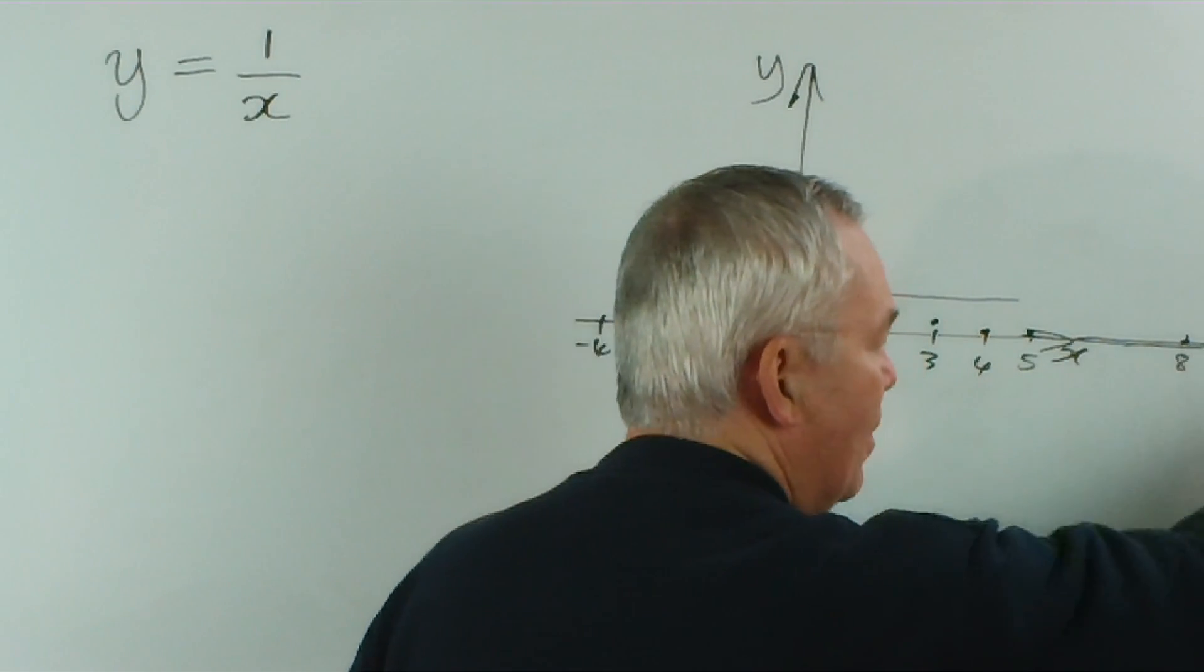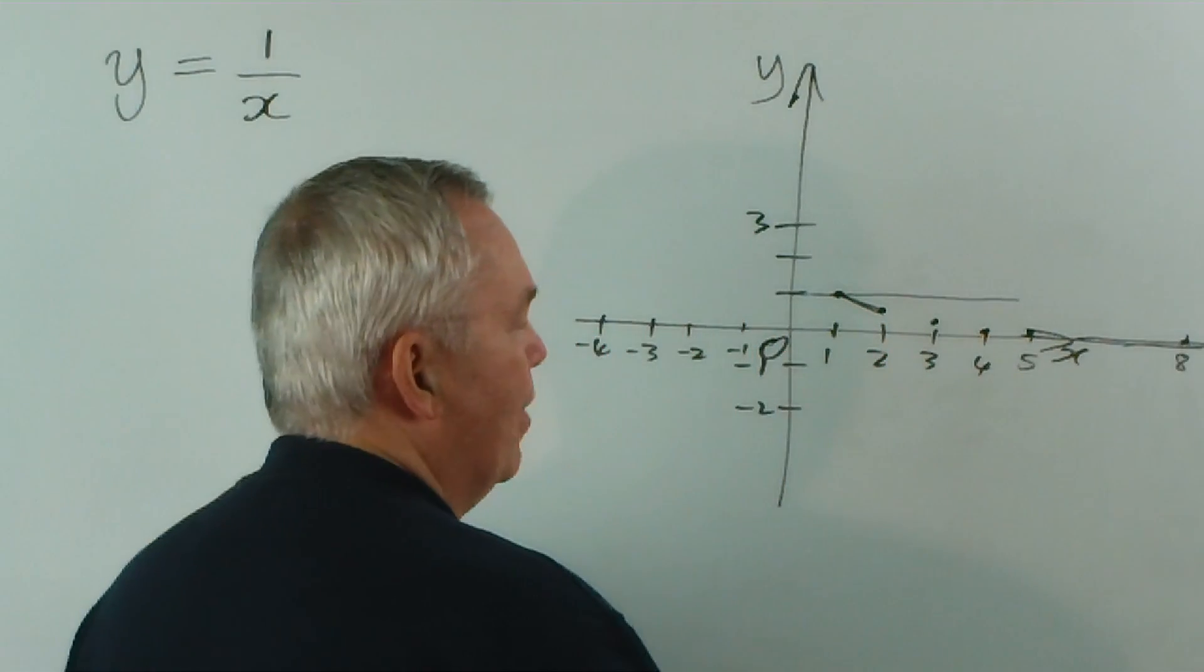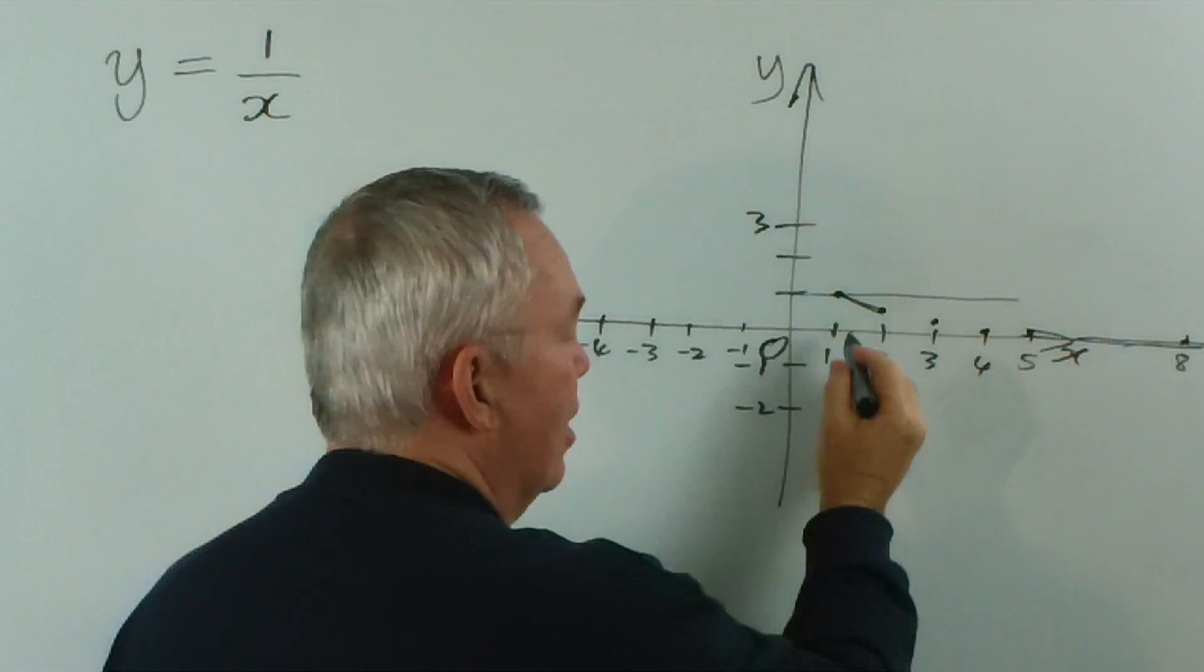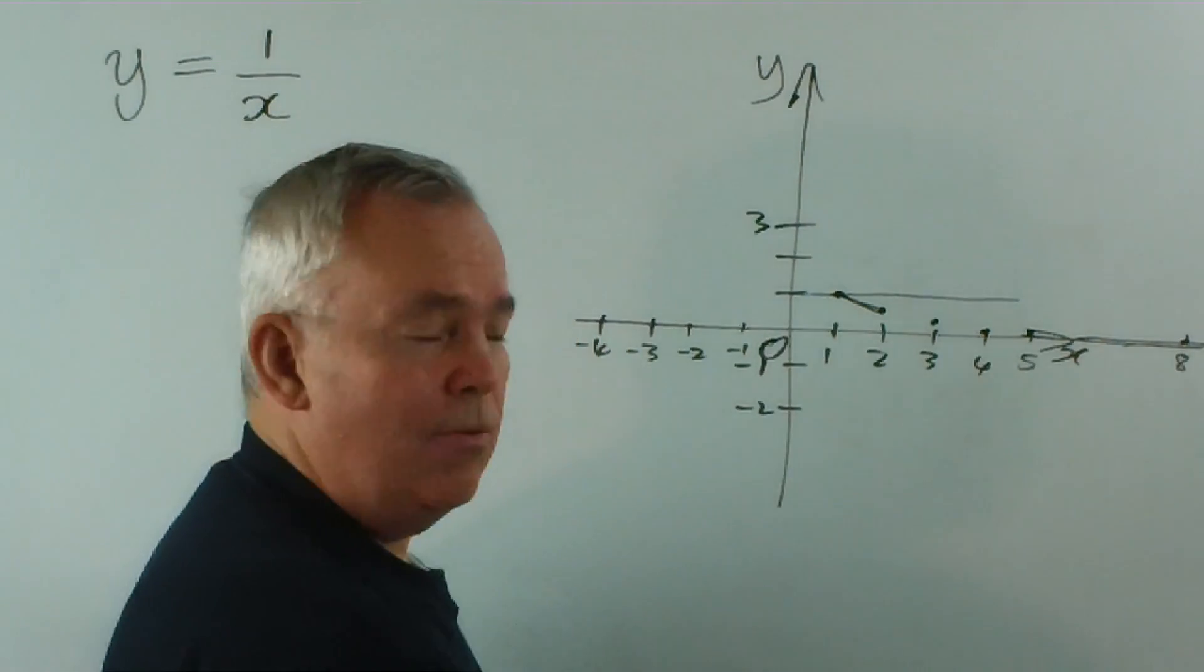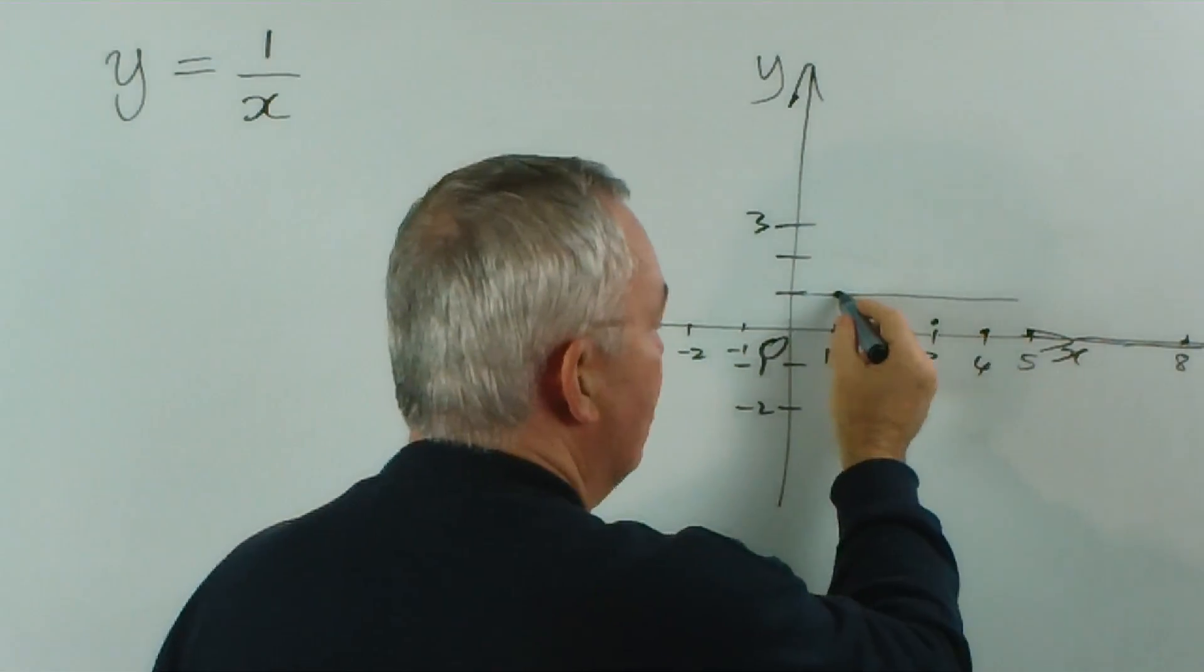As far out as this goes, it will always have a positive value. It never actually touches the axis, but it does get very, very close. In fact, it can be as close as we wish.